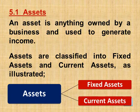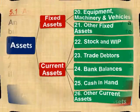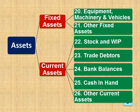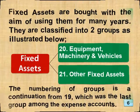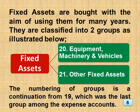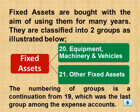Section 5.1 Assets. An asset is anything owned by a business and used to generate income. Assets are classified into fixed assets and current assets, as illustrated here. This slide shows the subclassifications of fixed and current assets and the different groups of accounts in each. Fixed assets are bought with the aim of using them for many years. They are classified into two groups, as illustrated below. The numbering of groups is a continuation from 19, which was the last group among the expense accounts.